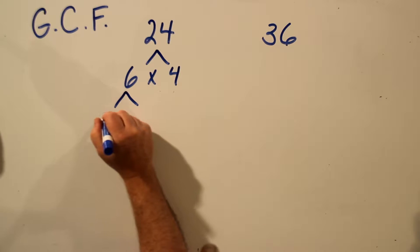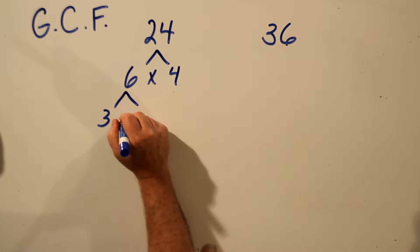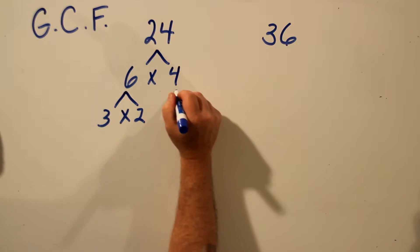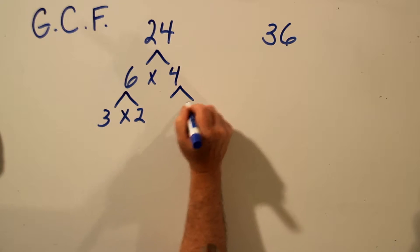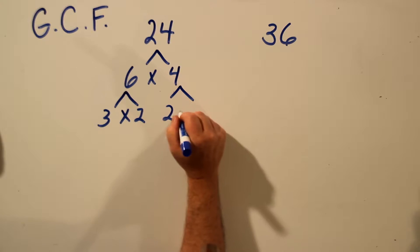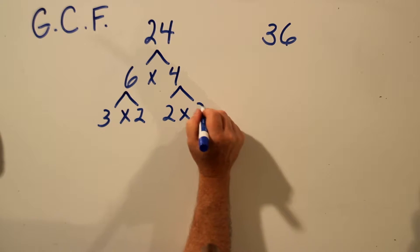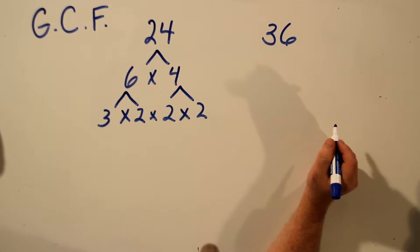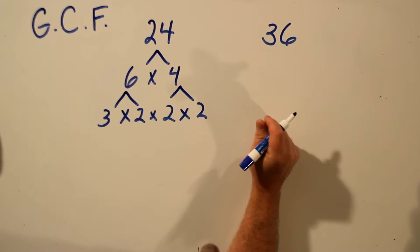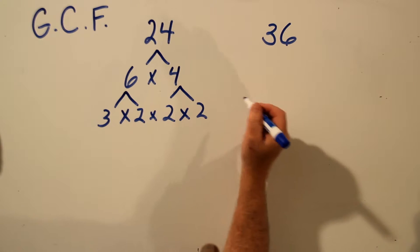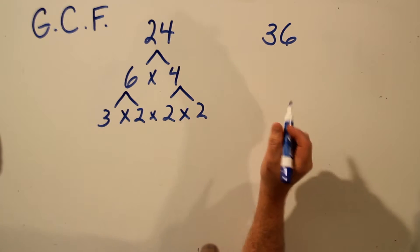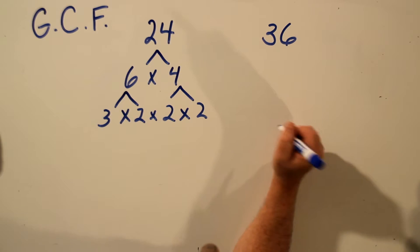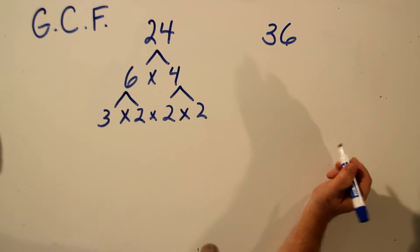6 can be factored as 3 times 2, and 4 can be factored as 2 times 2. And those are the prime factors for 24. Whether you start with 12 times 2 or 6 times 4 doesn't matter — you'll end up with the same numbers at the bottom, maybe in different order.